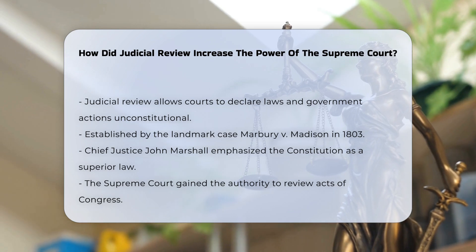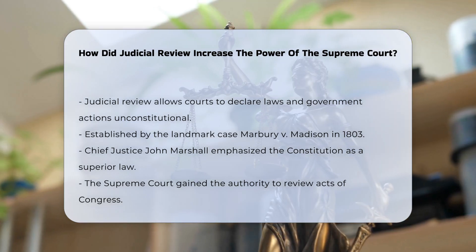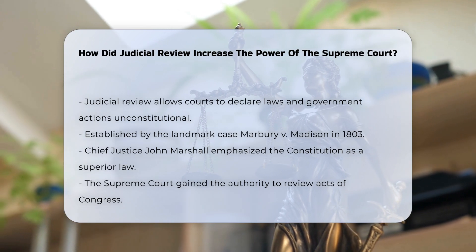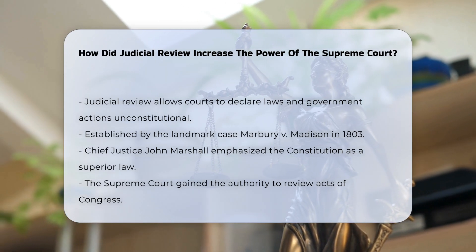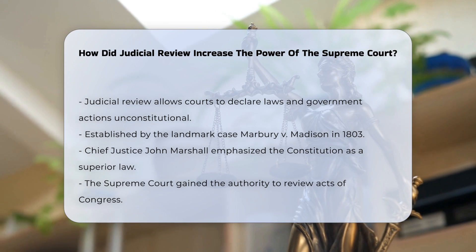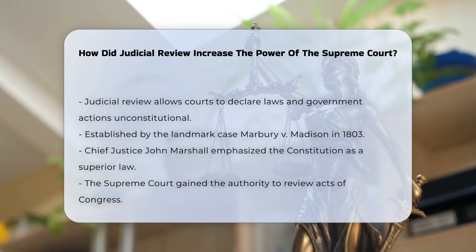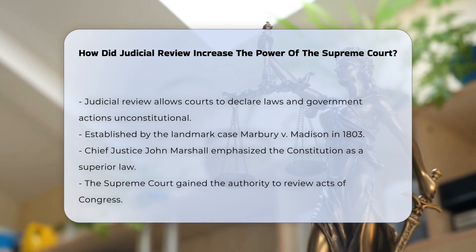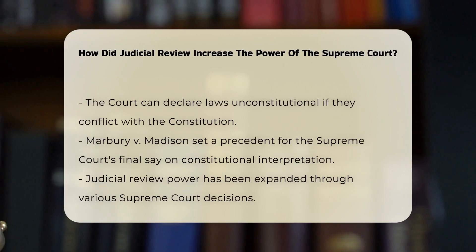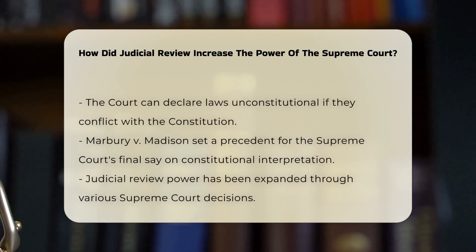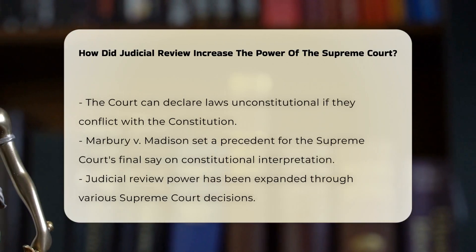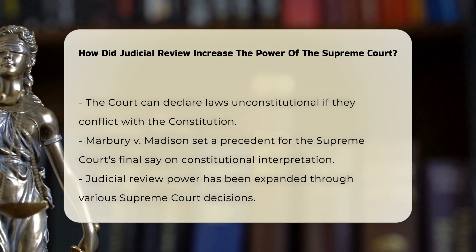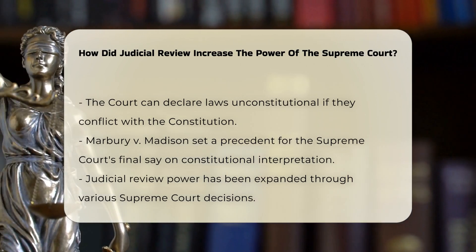In Marbury v. Madison, Chief Justice John Marshall argued that the Constitution is a superior, paramount law that cannot be altered by ordinary legislative acts. The court ruled that it had the authority to review acts of Congress and declare them unconstitutional if they conflicted with the Constitution. This decision set a precedent that the Supreme Court has the final say on the interpretation of the Constitution.